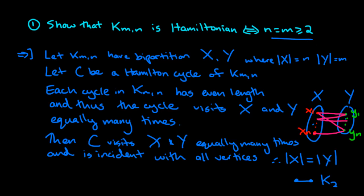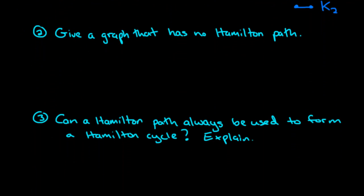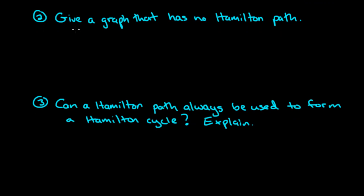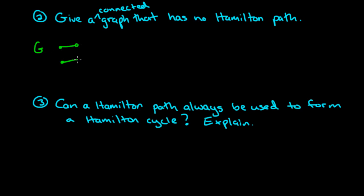Let's move on to the next question. The first of these is: give a graph that has no Hamilton path. I should be careful and point out that I meant to say give a connected graph, because clearly if your graph has two disconnected pieces, then of course there is no Hamilton path — you cannot get from one component to the other. So more interestingly, let's look for a connected graph that has no Hamilton path.